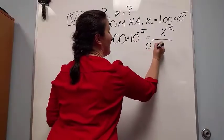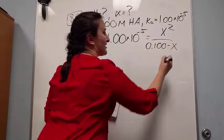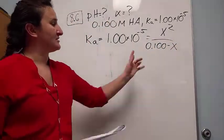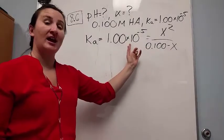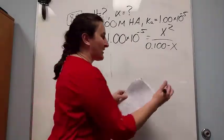which in this case is 0.100 minus x. Now because there's such a difference between F and Ka, we can assume this x goes to 0.